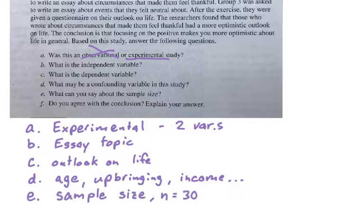Part E. What can you say about the sample size? First of all, you can say what it is. The sample size n is equal to 30. That's our common notation. Why is it 30? We had three groups and there were 10 people that we put into each group. So we had a total of 30 people participating in this study.